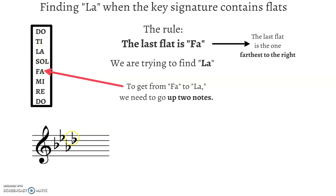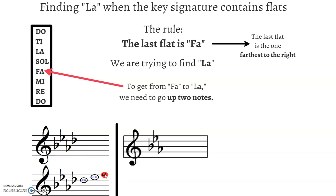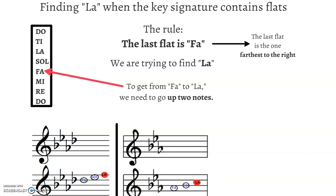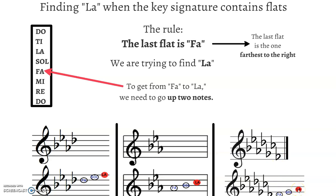So our first example: the last flat is this one on the line — that's where Fa is. We go up two from there: Fa, Sol, La. Second example: the last flat is this one on the space. Fa is there, go up two: Fa, Sol, La. And our last example: the last flat here is Fa — Fa, Sol, La. And that is it.